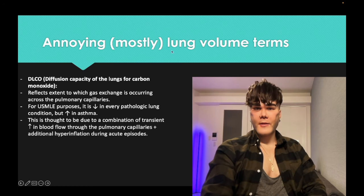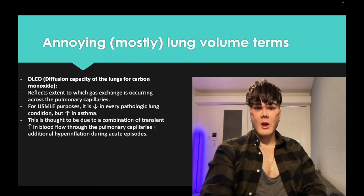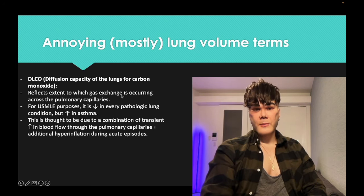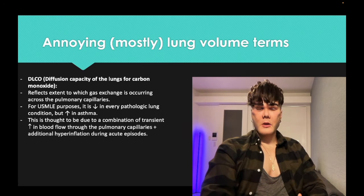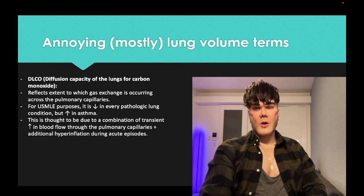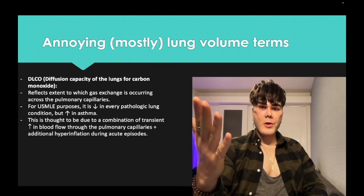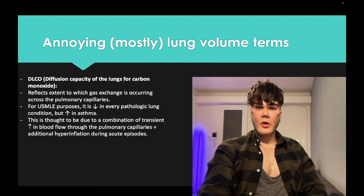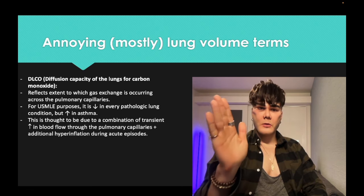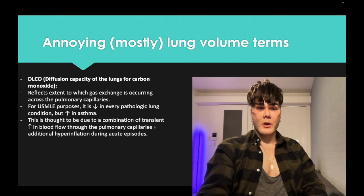DLCO — diffusion capacity of lungs for carbon monoxide — reflects the extent of gas exchange across the pulmonary capillaries. For USMLE: DLCO is decreased in all lung pathologies, but it's increased in asthma. So if a big paragraph question says DLCO is decreased, it's not asthma. If DLCO is increased, the answer is asthma. That's how it applies.